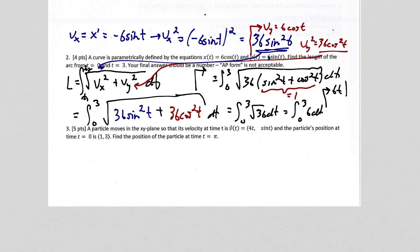I get 6t evaluated from 0 to 3 after I integrate. And then that gives me 6 times 3, which is 18, minus 6 times 0, which is 0. So my answer is 18.